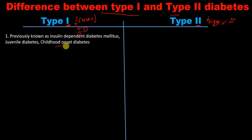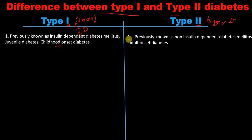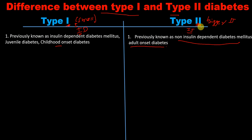Whereas type 2 — number 2 is bigger than number 1 — has two I's, meaning non-insulin dependent diabetes mellitus (NIDDM). It is also called adult-onset diabetes, because adults are bigger than children, just as number 2 is bigger than number 1.